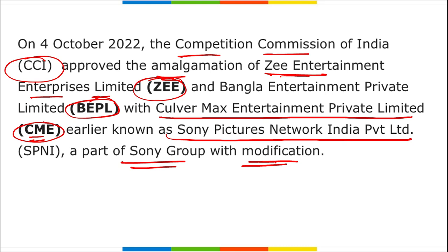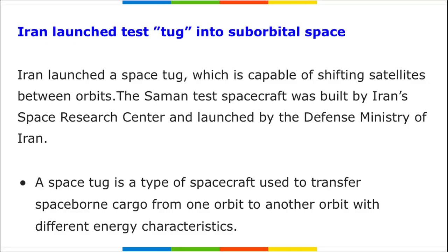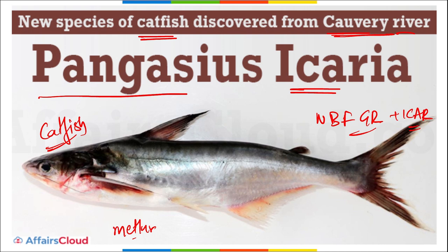A new species of catfish, named Pangasius icaria, was discovered from the Cauvery River. Scientists from the National Bureau of Fish Genetic Resources (NBFGR) and ICAR (Indian Council of Agriculture Research) discovered this new catfish species of the genus Pangasius. The Cauvery River flows through Tamil Nadu, where the Mettur Dam is also located.